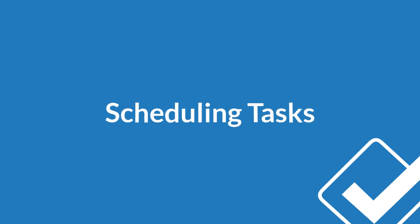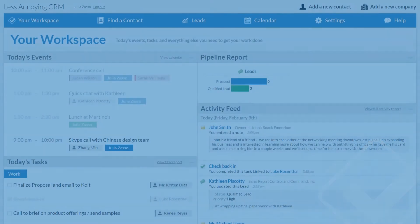You've already seen how to enter historic data into the CRM. But what about keeping track of the things you still need to do? We offer a few different features to help with this, and the easiest one is the task list. A task is basically just a reminder that you need to do a certain thing on a certain day in the future.